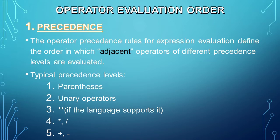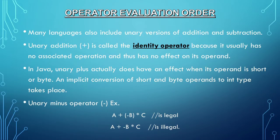Let's first tackle the operator evaluation order. Number one: precedence. The operator precedence rules for expression evaluation define the order in which adjacent operators of different precedence levels are evaluated. When we say adjacent, they are separated by at most one operand. Typically, precedence levels include parentheses, unary operators, double asterisk if the language supports it, asterisk (multiply), slash (divide), then plus and minus. Many languages also include unary versions of addition and subtraction. Unary addition is called the identity operator because it usually has no associated operation and thus has no effect on its operand.